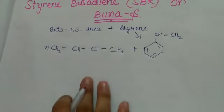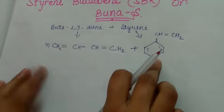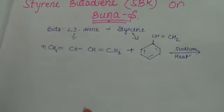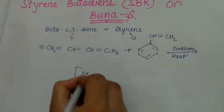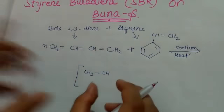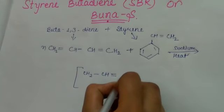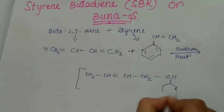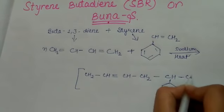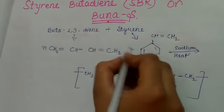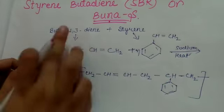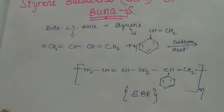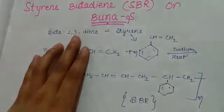Now when we take n units of styrene and n units of buta-1,3-diene, then SBR is ready, which we call styrene butadiene and Buna-S rubber.